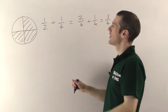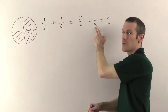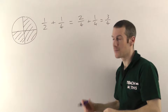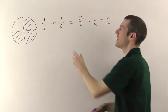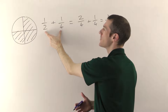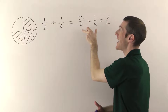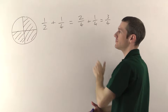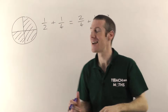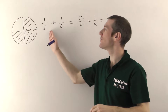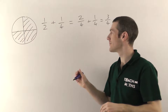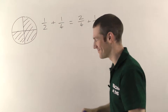So adding and subtracting fractions where the number on the bottom is the same is really easy to do. If it's not the same, all you need to do is convert them so the fractions have the same number on the bottom. The tricky part about adding and subtracting fractions is how you convert the fractions to make the number on the bottom the same.